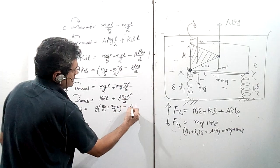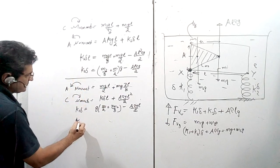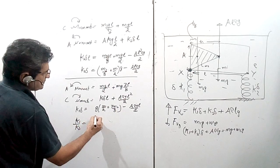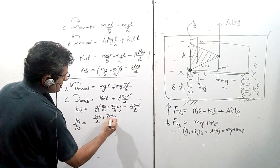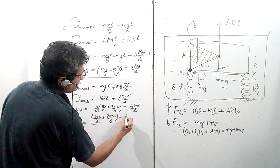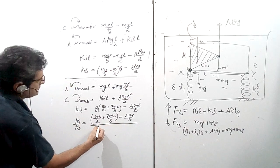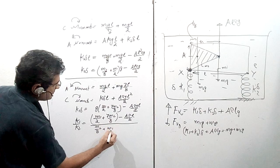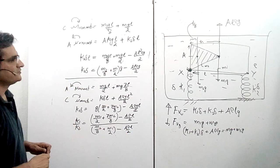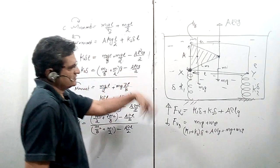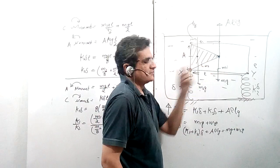Taking the ratio, G cancels, and the final result is: k1/k2 = (m1/2 + 7·m2/8 − A·rho·L/2) / (m2/8 + m1/2 − A·rho·L/2). This is the ratio of the two spring constants needed to keep the system horizontal. The whole exercise was essentially to illustrate the difference between center of gravity and center of volume.